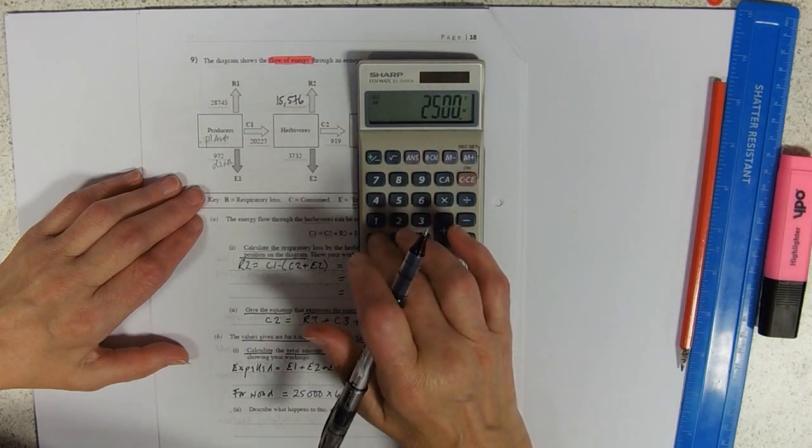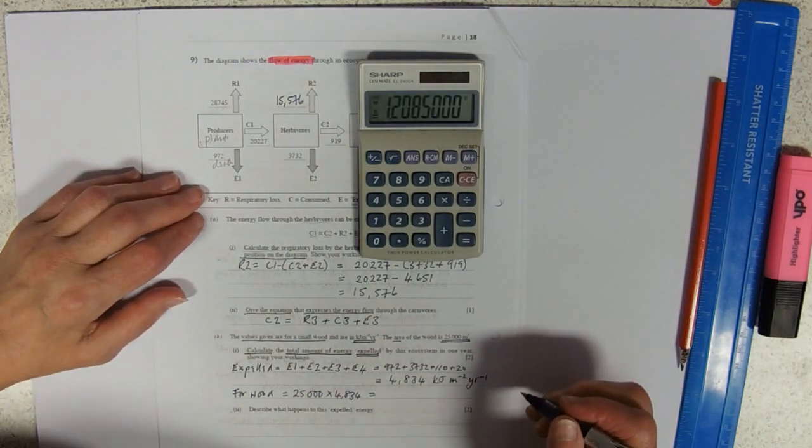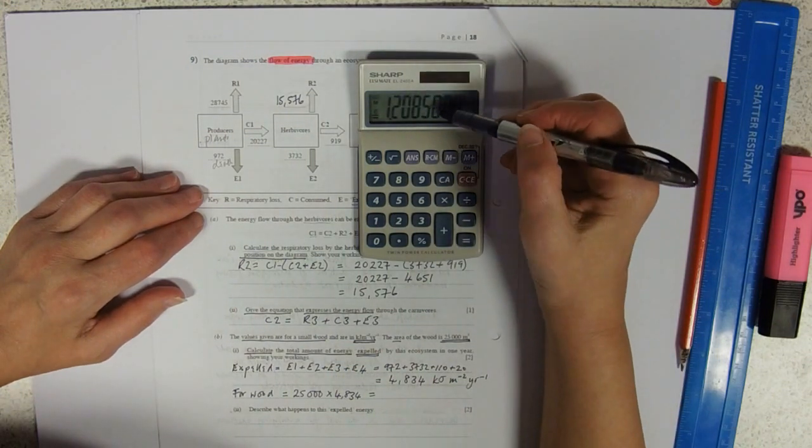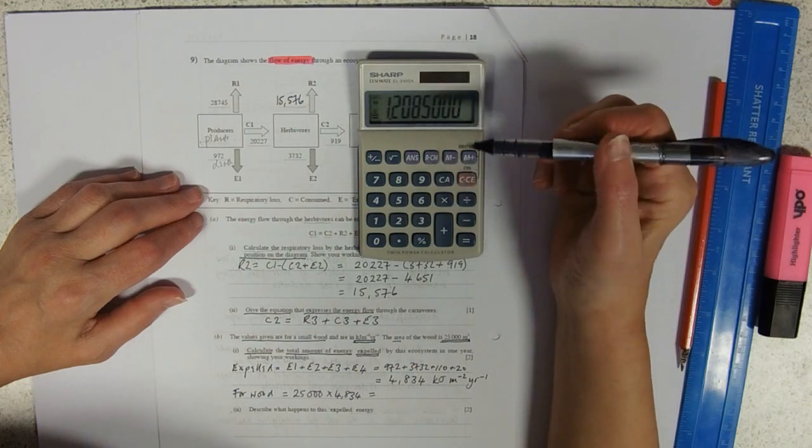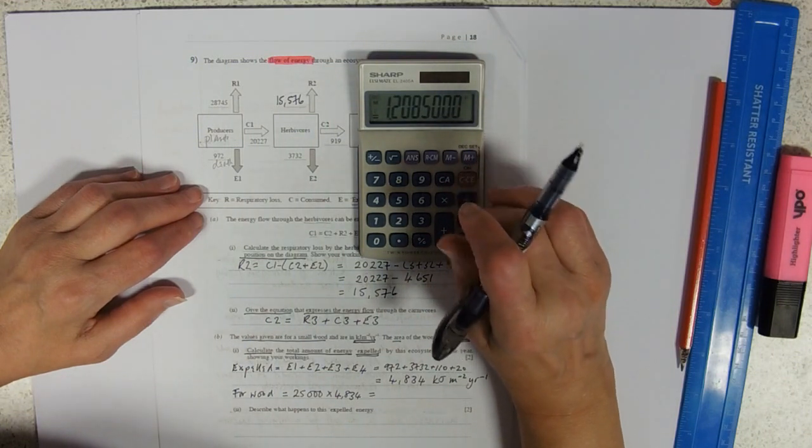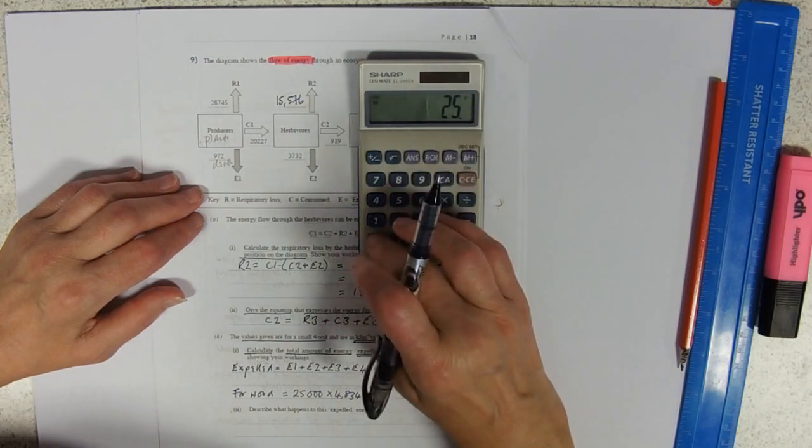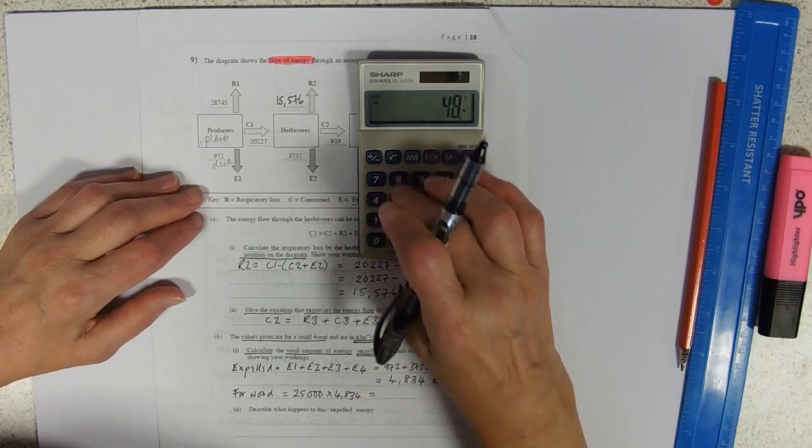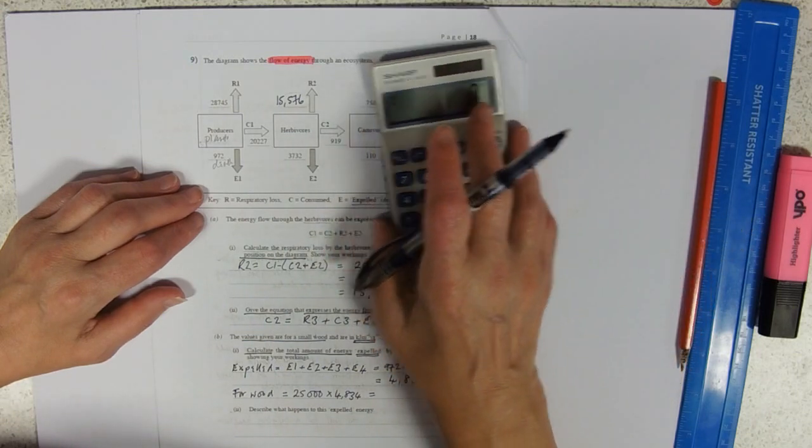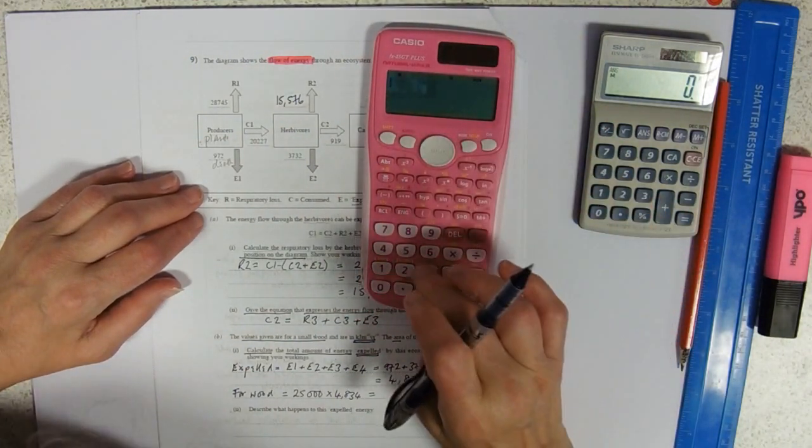I don't think my calculator actually does that. I don't think it's big enough. Okay, help. 25,000 times 4,834. That's not a big enough number. My calculator won't do it. I'm going to borrow Hannah's pink calculator, which is super. Look at that. Oh, and it's on as well.